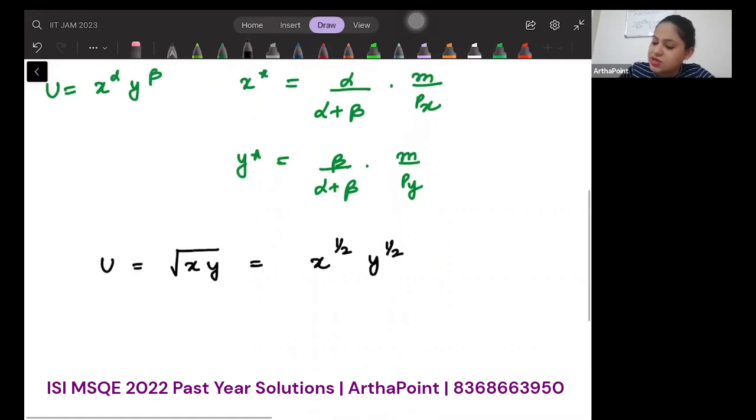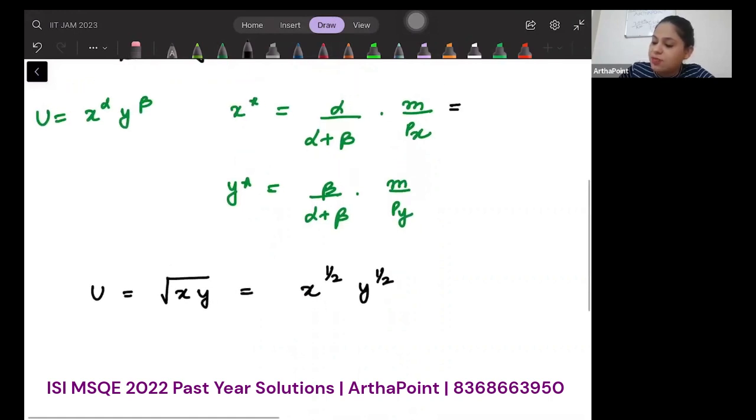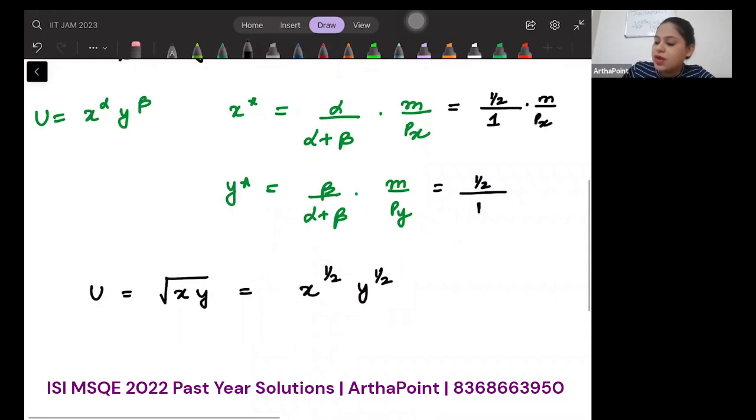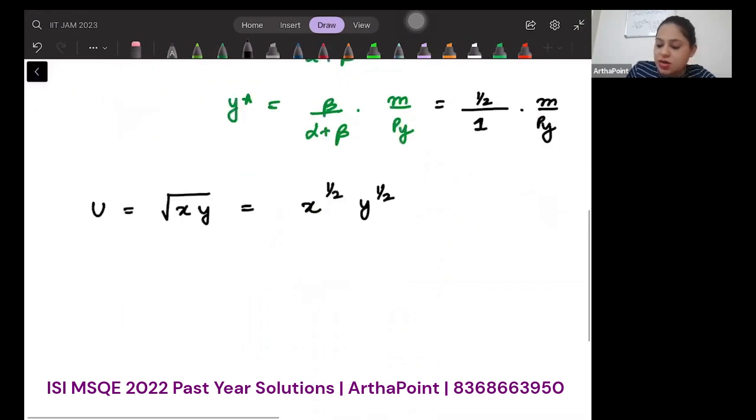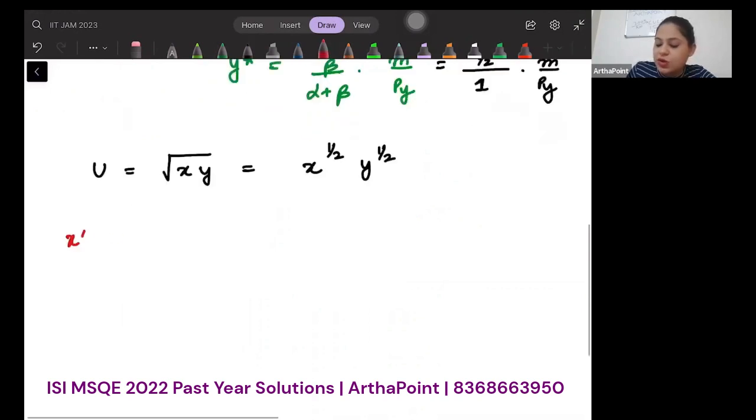So if I just take it here, this is going to be 1/2 upon (1/2 + 1/2) = 1, so m/px. And this will be m/py. So my x* is going to be m/(2px) and y* is going to be m/(2py).